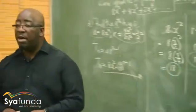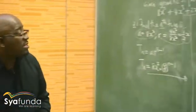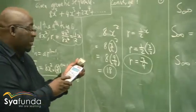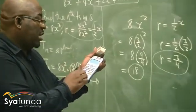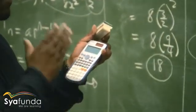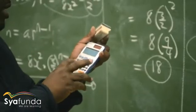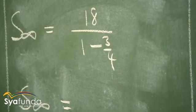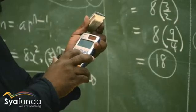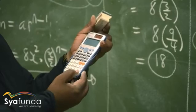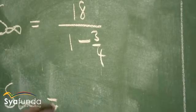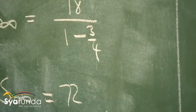You take your calculator and punch that in. Remember this is a fraction, so use the fraction button. On top you have 18. On the bottom you have 1 minus 3 over 4. Press the equal sign and the calculator will do the rest. In this particular case, the answer is 72. This is then the sum to infinity.